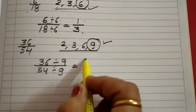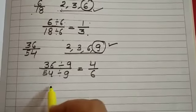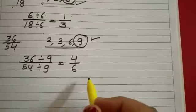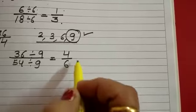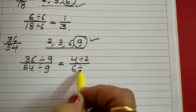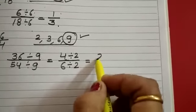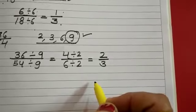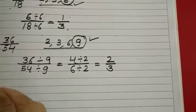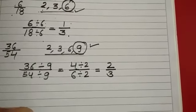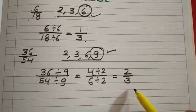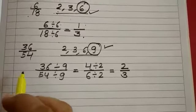We will get 4 by 6. But this is not the lowest term of the fraction 36 by 54, because again we can divide both by the common factor that is 2. Again we will divide 4 by 2 and 6 by 2. We will get 2 and 3. So now this is the simplified form — in other words, the reduced form — of the fraction 36 by 54.